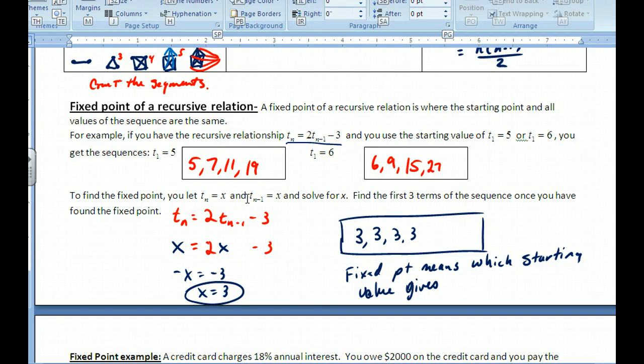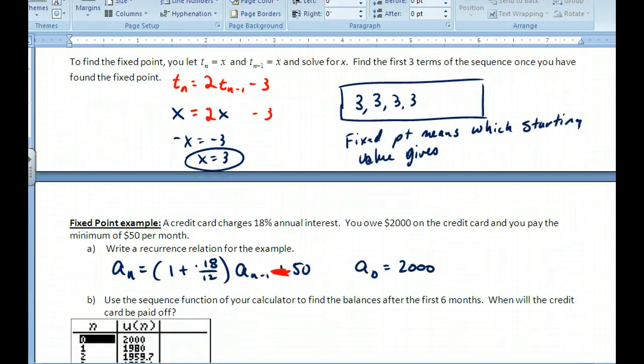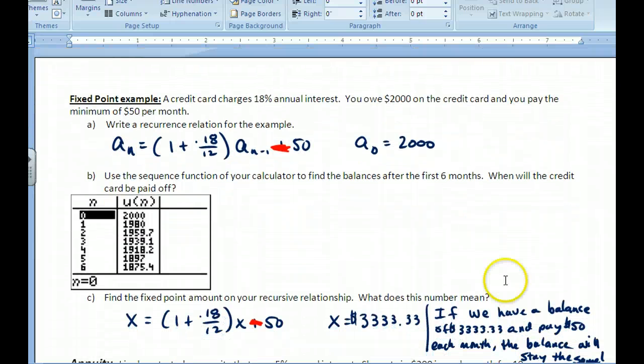To continue this lesson on Post 9.3, I did make a mistake on the previous notes—this number is 19. If we go down to the back side, we were in the middle of the credit card example.